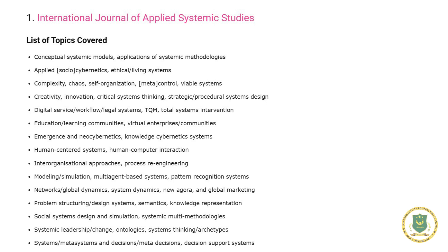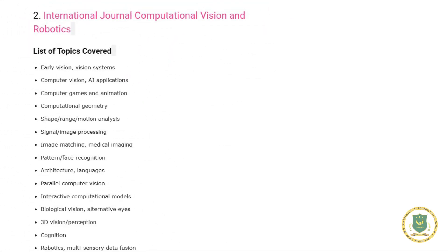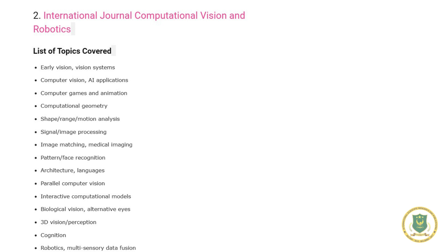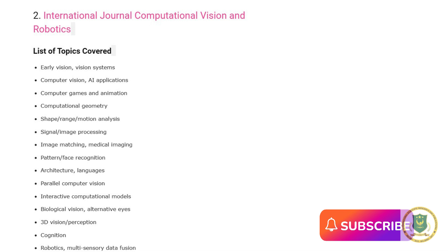Number two: International Journal of Vision and Robotics. Topics covered include early vision, vision systems, computer vision and AI applications, computer games and animation, computational geometry, shape, range, or motion analysis, signal or image processing, image matching and medical imaging, pattern or face recognition, architecture and languages, parallel computer vision, interactive computational models, biological vision, 3D vision or perception, recognition, cognition, robotics, and multi-sensor data fusion.